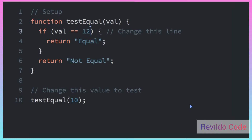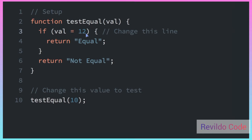We'll say if Val equals 12. The reason why we can't just use a single equal sign is that a single equal sign is the assignment operator. If we just had a single equal sign, that would mean we were setting the value of the Val variable to equal 12. We're not trying to set it to 12 — we're trying to check if the value of this variable equals 12. So we have to use the double equal sign.